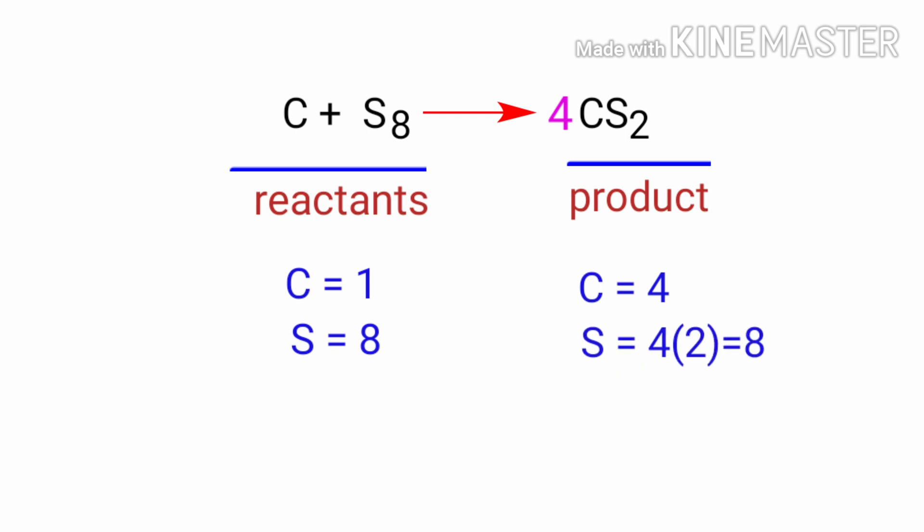The sulfur atoms are balanced, but the carbon atoms are unbalanced. To balance that, we need to put a coefficient of 4 in front of C.